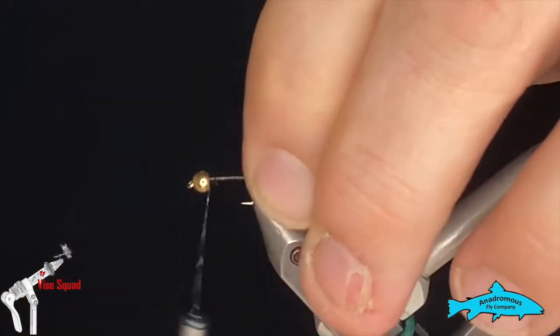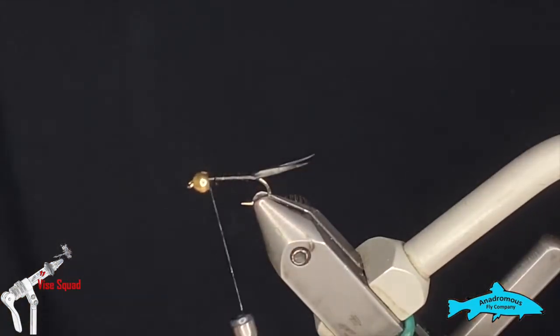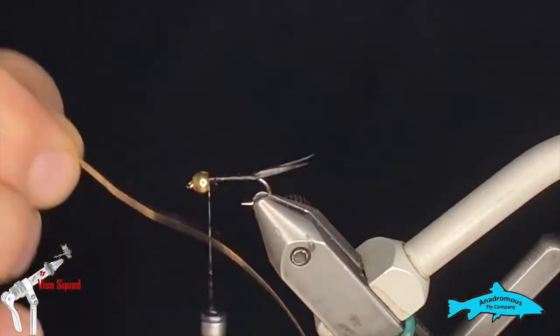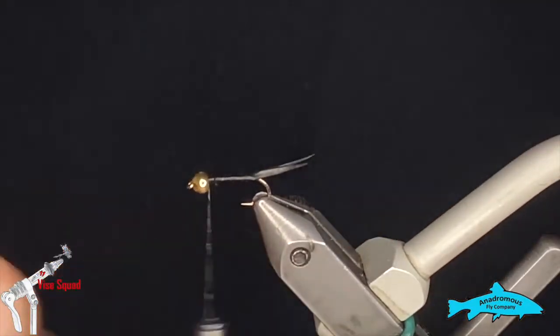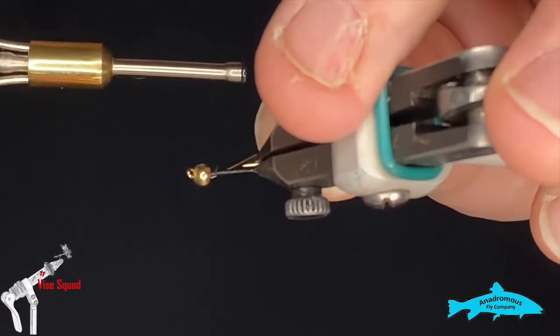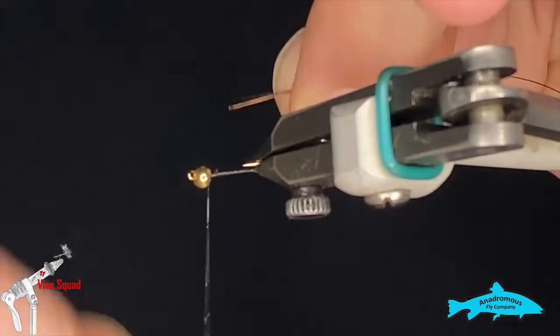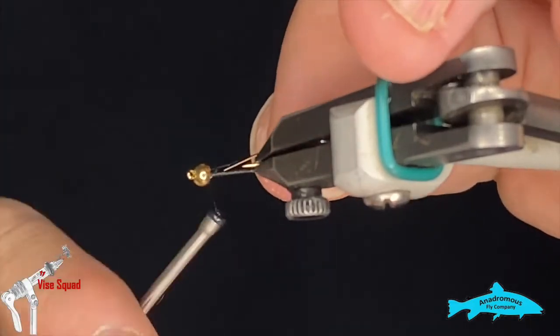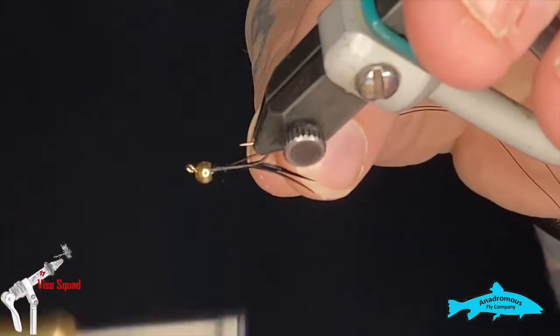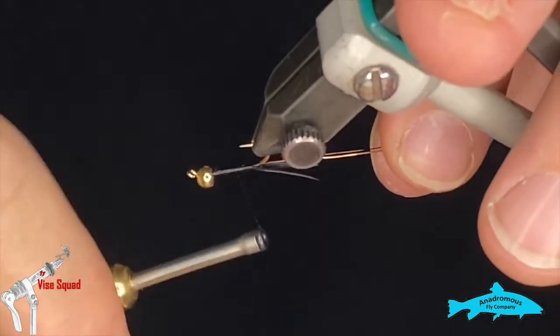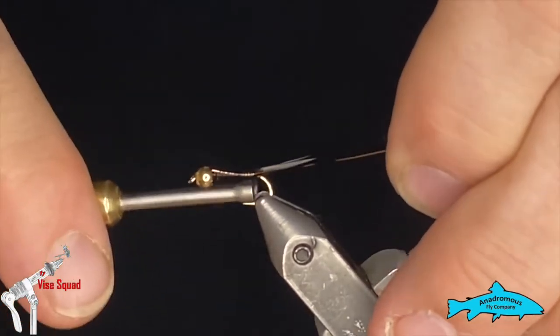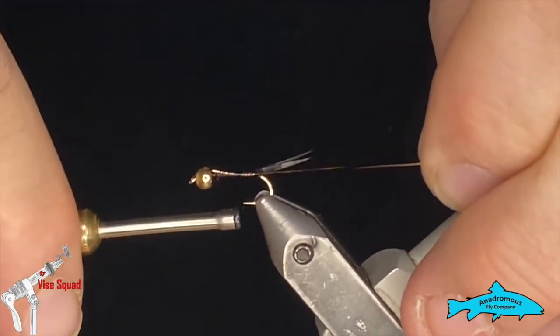All righty, now for our body. This is going to be a two-tone wire body, and we're going to use some size small black ultra wire and some size small brassy copper ultra wire. I've got them lined up and I'm going to tie them in on the far side of the hook. I like to tuck the ends underneath the bead if they'll cooperate, just to hide them in there. We'll tie those and keep them nice in line with that hook shank all the way to the back. You want to make sure your thread goes all the way down to where the biots are, otherwise your wire wraps won't start very well.